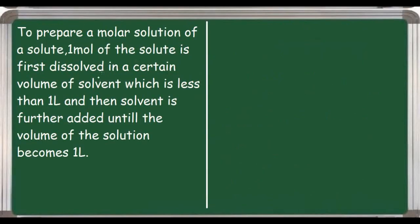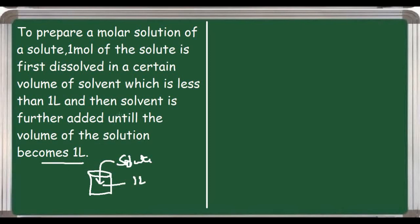The next point is about the preparation of molar and molal solutions. To prepare a molar solution, 1 mole of the solute is first dissolved in a certain volume of solvent which is less than 1 liter. Then solvent is further added until the volume of the solution becomes 1 liter, because the volume of the resulting solution must be exactly 1 liter after the solute has been added. That is why the solvent is initially taken to be less than 1 liter.